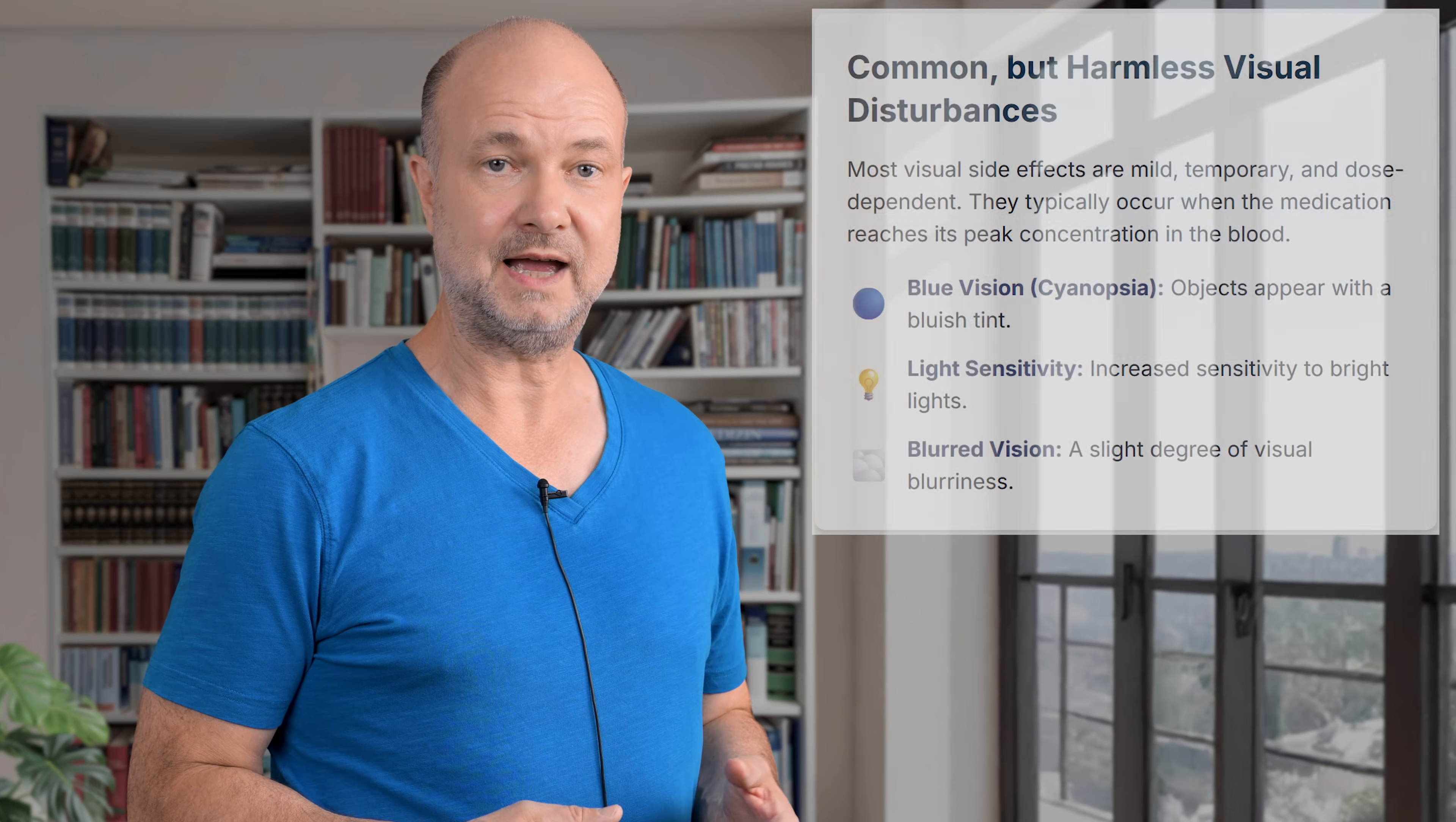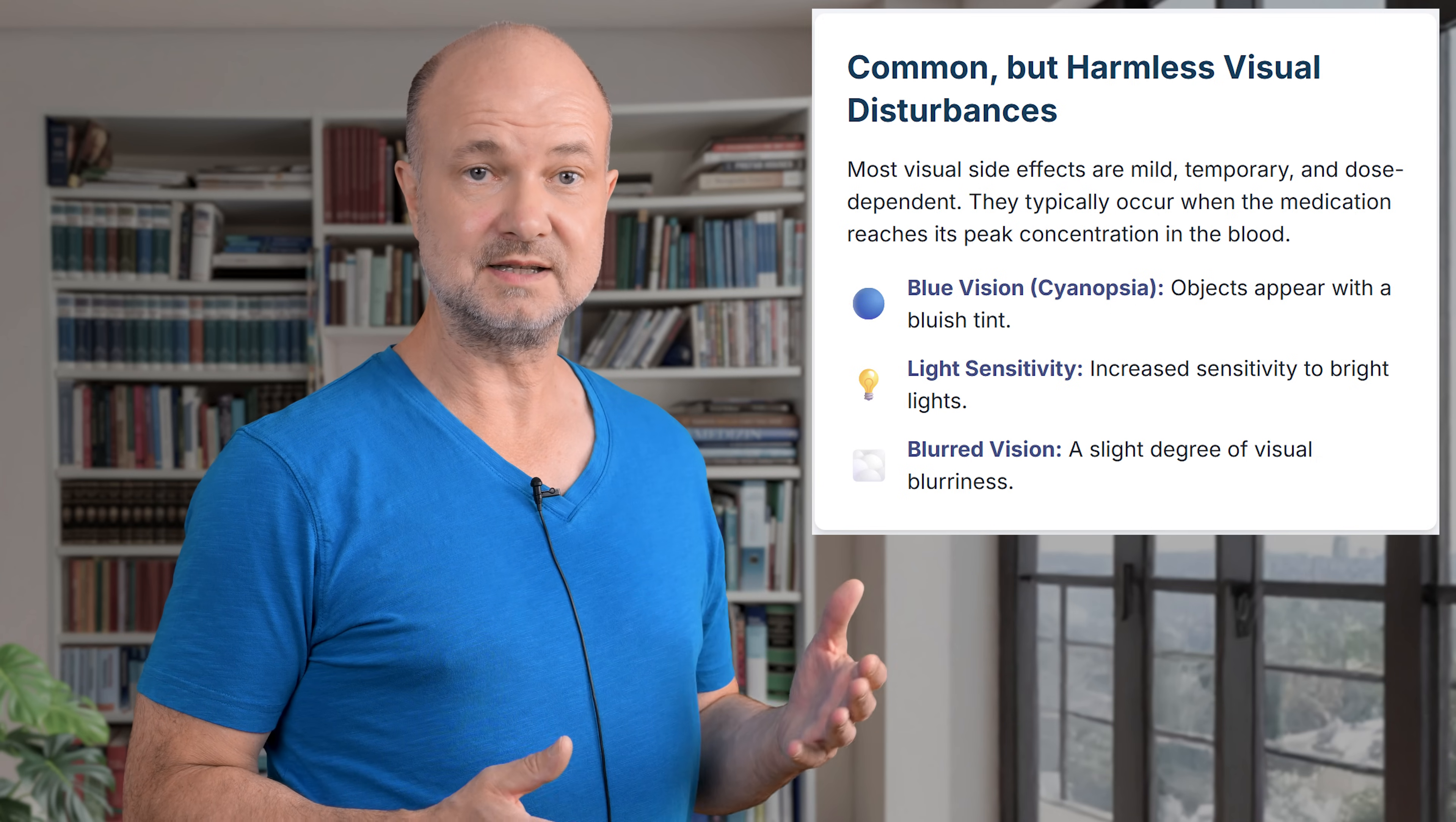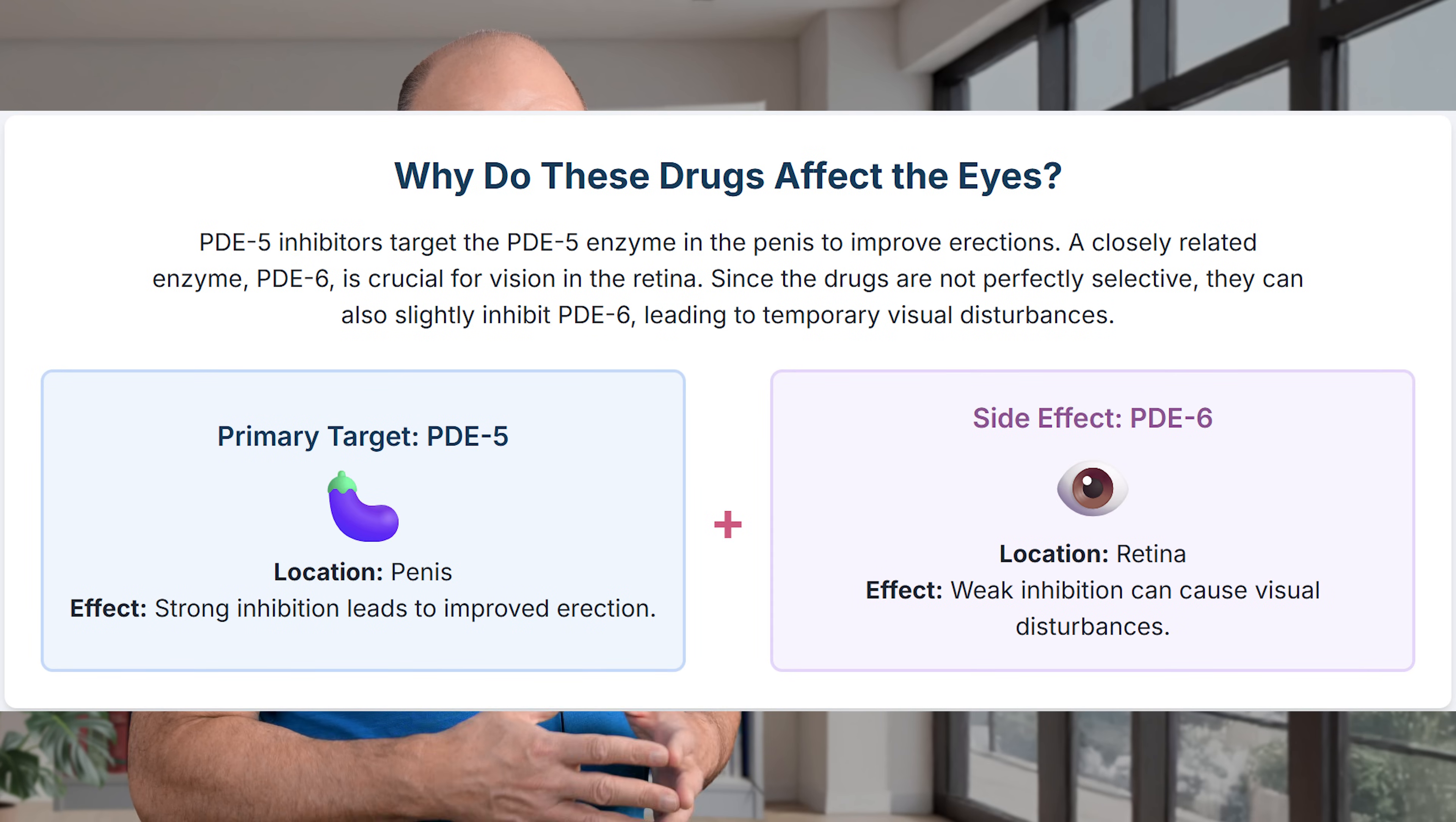The most common effect is something called blue vision or cyanopsia, as if you are looking through light blue sunglasses. Other men notice they are more sensitive to light or that their sight gets mildly blurry. The mechanism is clear. Sildenafil and Vardenafil also act a little bit on another enzyme, PDE6, which is crucial in the retina. That's why Avanafil, which is far more selective, shows almost no visual side effects in clinical trials.